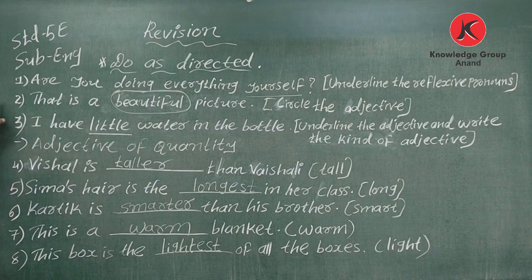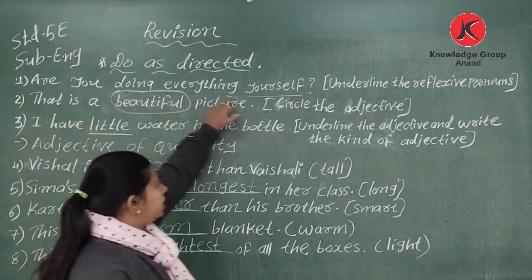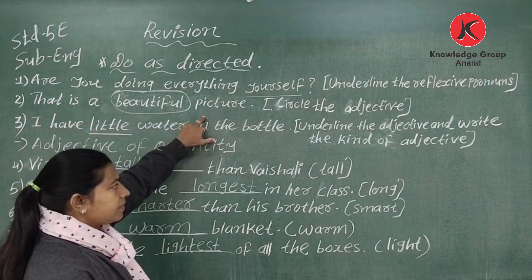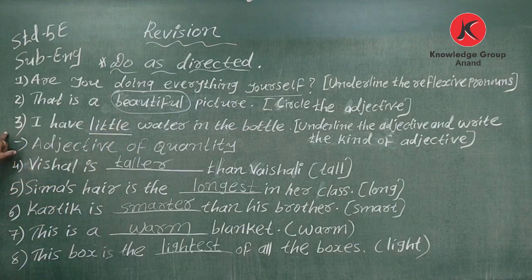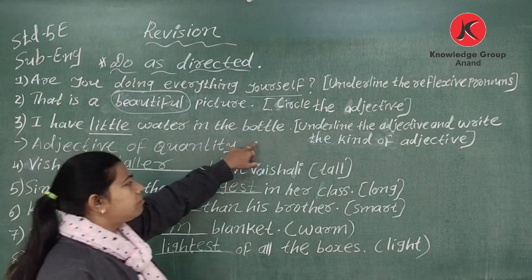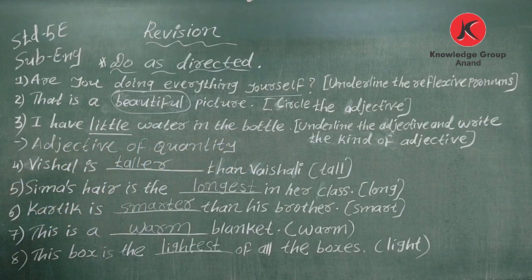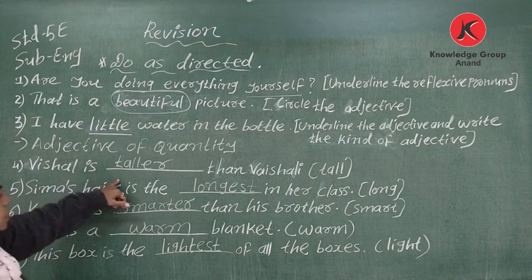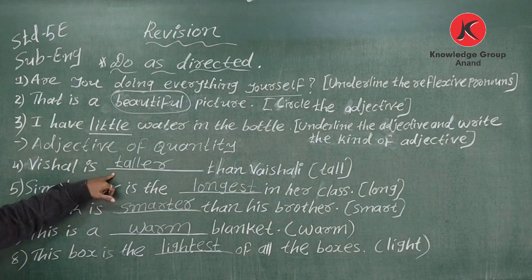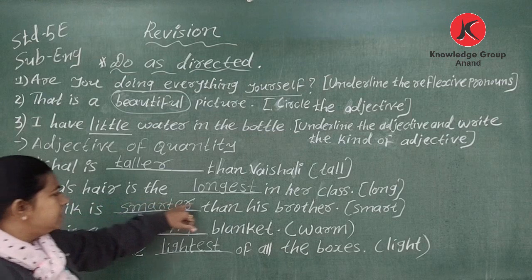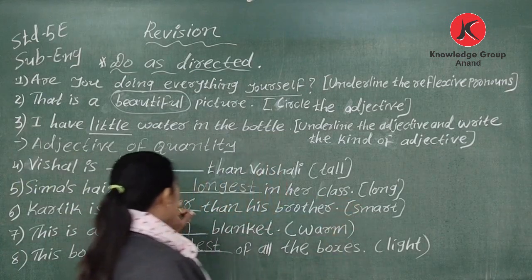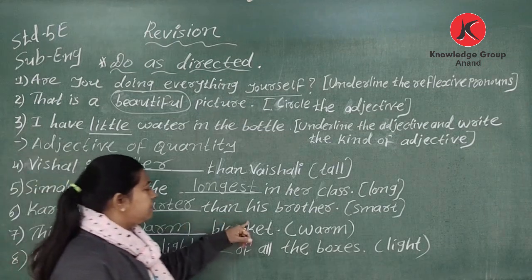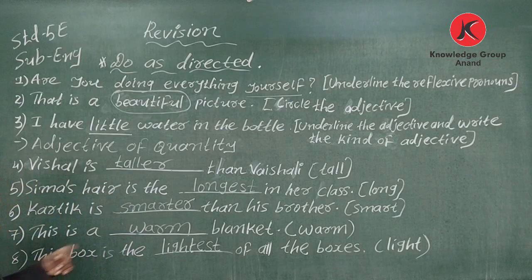Let's read the answers once again. Number one: 'Are you doing everything yourself?' — reflexive pronoun underlined. Number three: 'little' is an adjective of quantity. Number four: 'Visar is taller than Vaishali' — comparative degree, tall comparison. Number five: 'Seema's hair is the longest in her class' — superlative form. Number six: 'Karthik is smarter than his brother' — smart, comparative form is smarter.